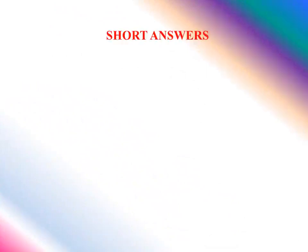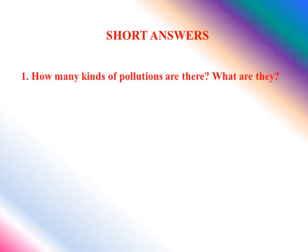Dear children, we have already learned the meanings and fill in the blanks from this lesson, Unit 1 — The World Around Us. Now we are going to see short answers from this lesson. First question: how many kinds of pollution are there, and what are they? There are four kinds of pollution: water pollution, land pollution, noise pollution, and air pollution.